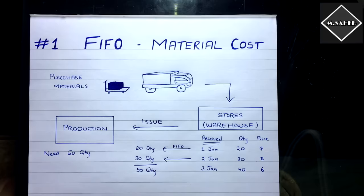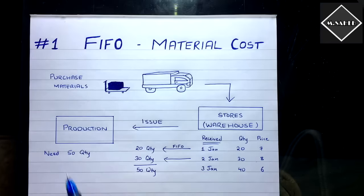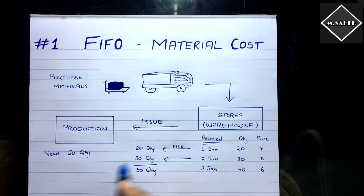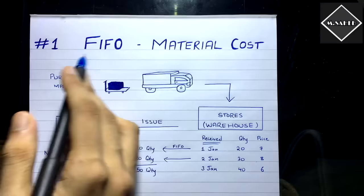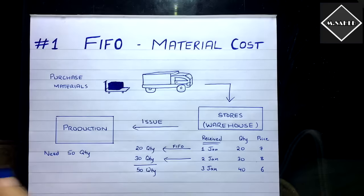Where does it go? If it's a factory, it goes to the production process. If it's a retail business, it goes to the showroom to be sold. Here we are discussing a factory. When you purchase raw materials from your supplier, they deliver it to your warehouse, and as and when the production department needs it, the store issues the raw material to production. Whatever comes in first goes out first — simple as that.